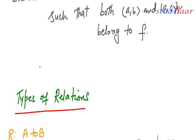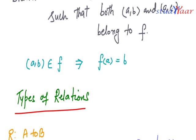Now let us understand the notation for writing an ordered pair as a function. If (a, b) is an element of my function f, then I can write it as f(a) = b. In this way you express that the mapping of element a in A gives b.